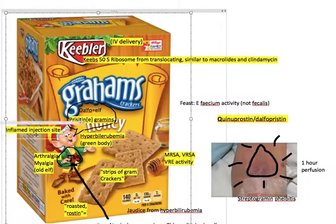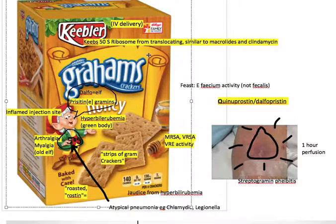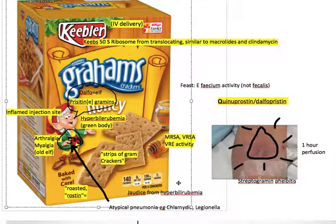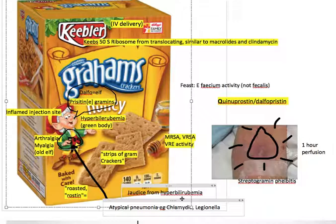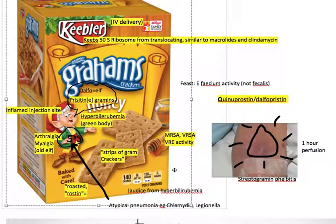This yellow box can remind us that a side effect is going to be hyperbilirubinemia, which of course leads to jaundice. So this yellow box can remind us of jaundice, in addition to the elf's yellow trousers. And his green jacket could also remind us of hyperbilirubinemia and jaundice as a side effect of this drug.